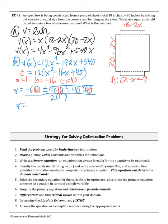Evaluating the two solutions: x = 8 + √19 ≈ 12.35, which is outside the domain of 0 to 9, so we discard it. x = 8 − √19 ≈ 3.641, which is within the domain. So we use x = 8 − √19 ≈ 3.641 inches.